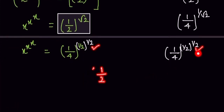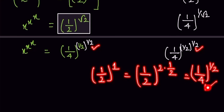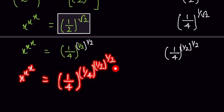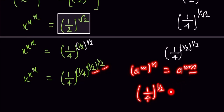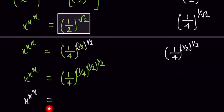Here (1/2)^1 can be written as (1/2)^(2 · 1/2) since 2 and 2 cancel, giving 1/2. So we write (1/4)^(1/4) to the power of (1/2). Then combining: (1/2) times (1/2) equals 1/4, so we get x^(x^x) = (1/4)^(1/4).